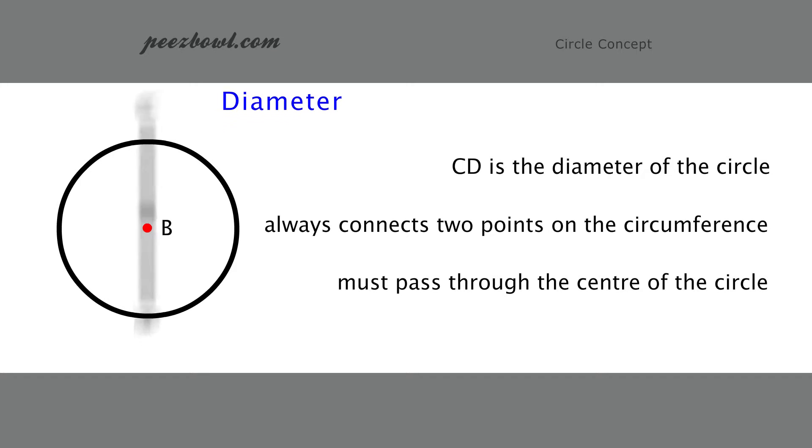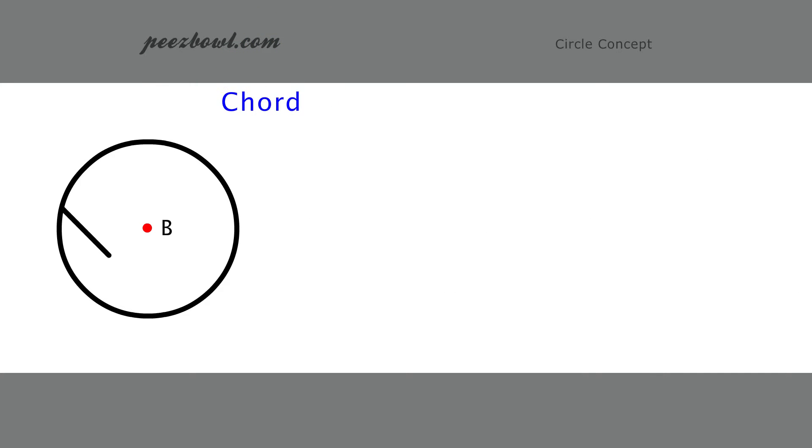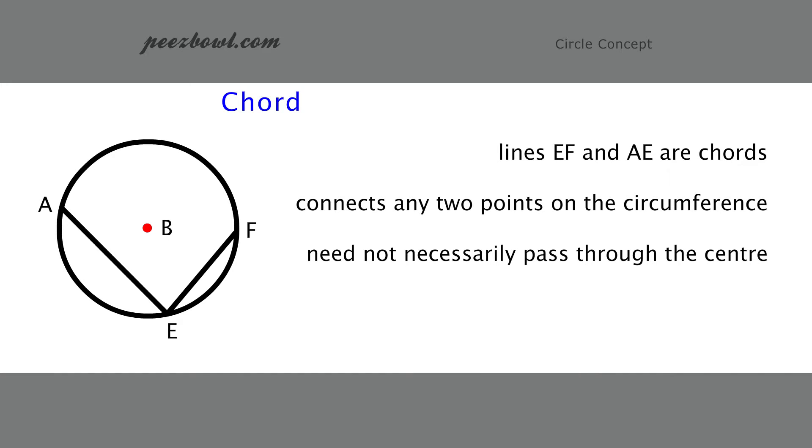Let us draw two more lines on the circumference. Here, straight lines EF and AE are called chords. A chord connects any two random points on the circumference and does not necessarily pass through the center of the circle. Diameter is the biggest chord of a circle.